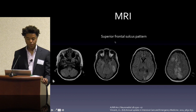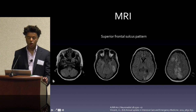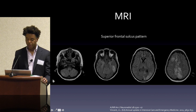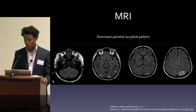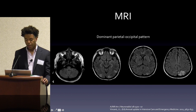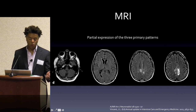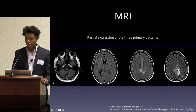Another pattern is the superficial frontal sulcus pattern — you still have some posterior involvement. The reason for posterior predominance is that the autoregulatory mechanisms for cerebral blood flow in the posterior circulation are worse than those in the anterior circulation, meaning the anterior circulation can handle higher pressures. You again see white matter FLAIR hyperintensity with sparing of the cortex. There's also a dominant parietal pattern with posterior involvement and cortical sparing. And finally there's a mixed or 'hodgepodge' pattern — a combination of all the different patterns — with cortical sparing and T2 FLAIR hyperintensity.